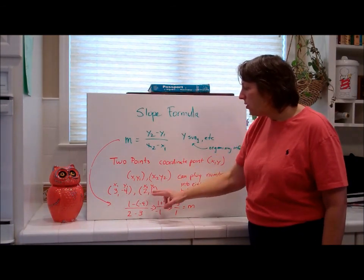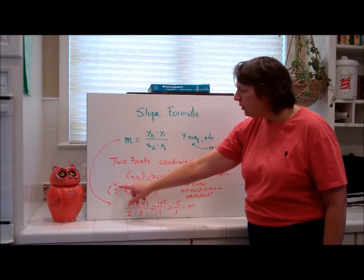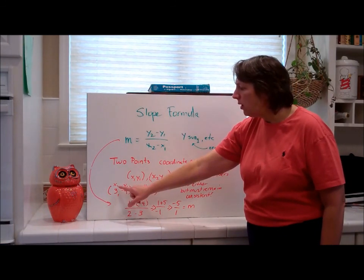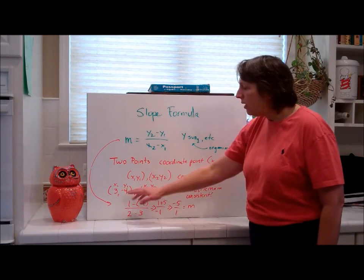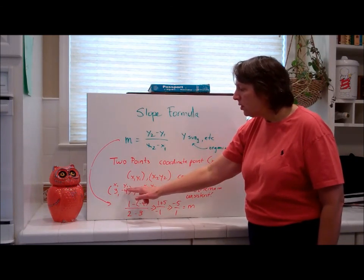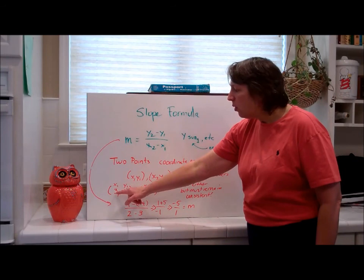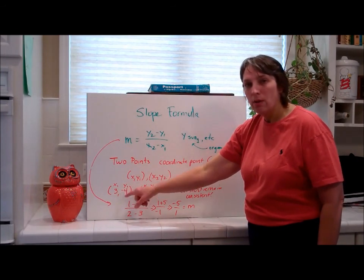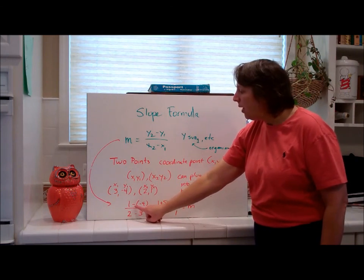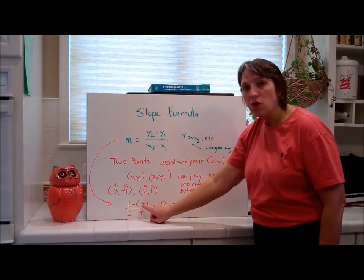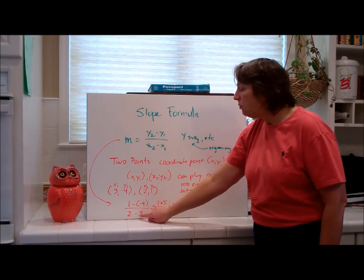So I have 3, negative 4, and 2, 1. I've labeled it, this one is the sub 1 number, x sub 1, y sub 1, x sub 2, y sub 2. You can't go x sub 1, x sub 2 because this is an x coordinate and this is a y coordinate. So you have to have an x and y in each one. I just simply plug it in, 1 minus negative 4, yes I must show that.